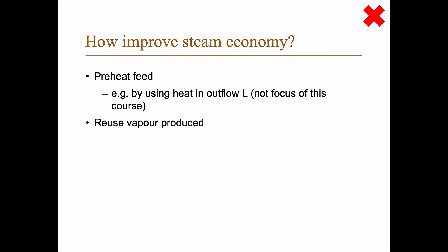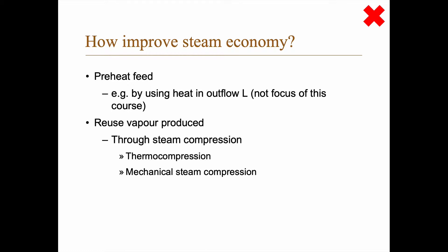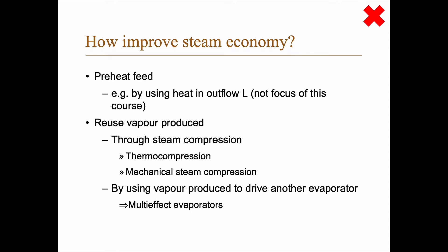We can also reduce the vapor produced, and there are two different ways of doing that. One is through steam compression, which basically means that you improve the quality of the steam produced. You can do that by either thermocompression or mechanical steam compression, and we will have a separate video on that. The other way is to use the vapor temperature produced to drive another evaporator — a multi-effect evaporator.